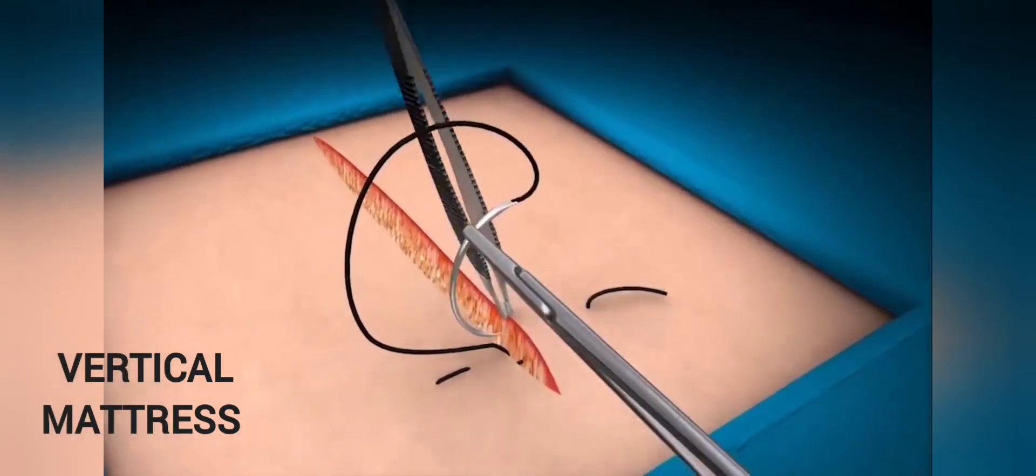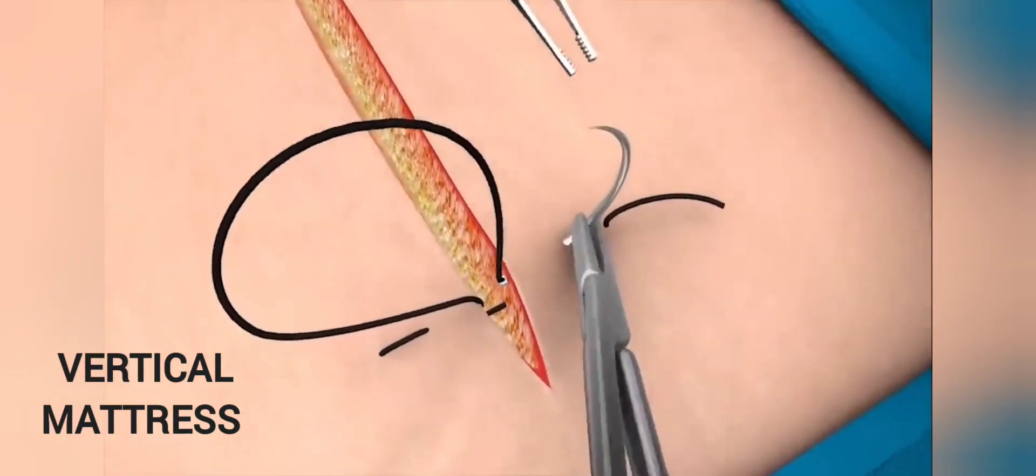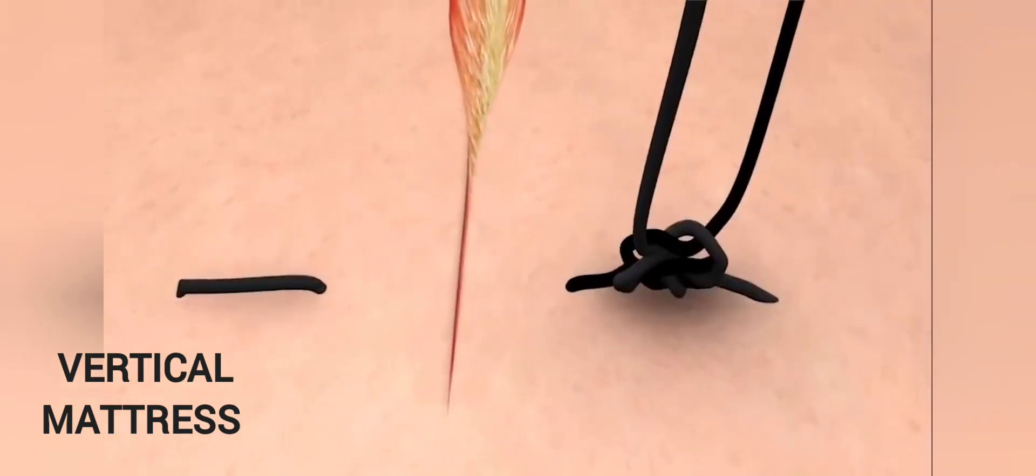Repeat on the opposite side of the wound from inside to outside. Pull the suture through and then tie a standard knot without excess tension.